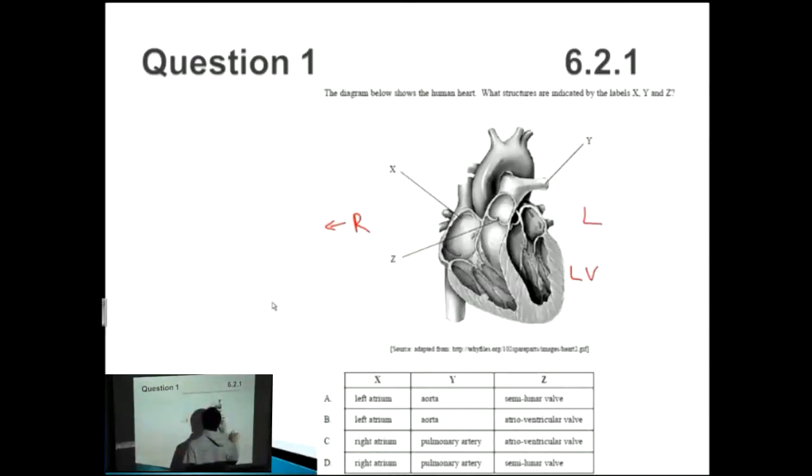So this is actually the left ventricle and this is actually the right ventricle. Given that, X is on the right, we're talking about the right side of the heart here and that's the first chamber, so we're talking about a right atrium. Straight away we can get rid of A, we can get rid of B.